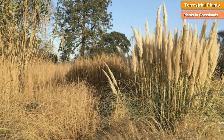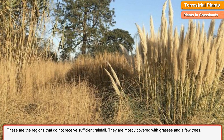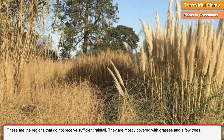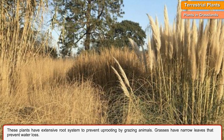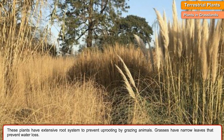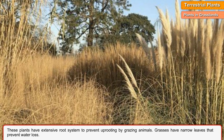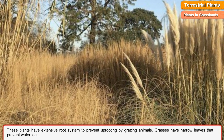Plants in Grasslands. These are the regions that do not receive sufficient rainfall. They are mostly covered with grasses and a few trees. These plants have an extensive root system to prevent uprooting by grazing animals. Grasses have narrow leaves that prevent water loss.